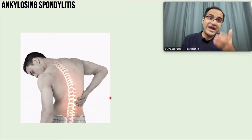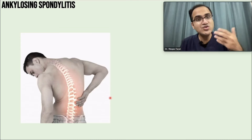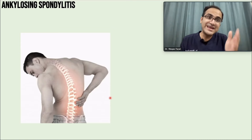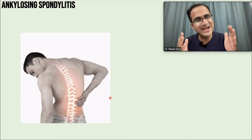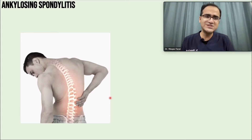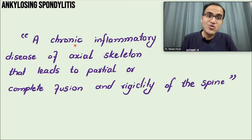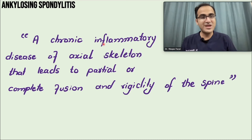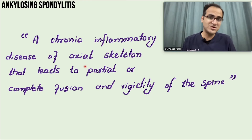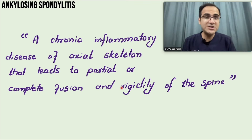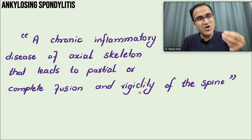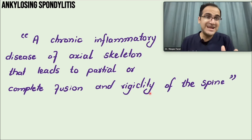The patient may also have extra-articular manifestations like inflammation in the eyes - uveitis - or GI problems like inflammatory bowel disease. This is the classical presentation of ankylosing spondylitis. It is a chronic inflammatory disease of the axial skeleton that leads to partial or complete fusion and rigidity of the spine, caused by immune-mediated destruction of the central skeleton.